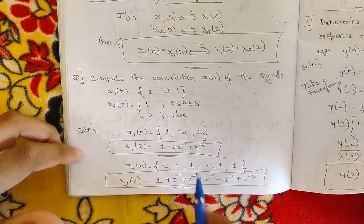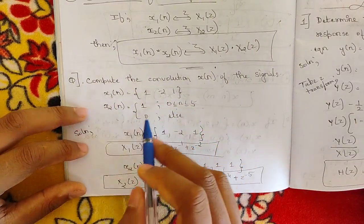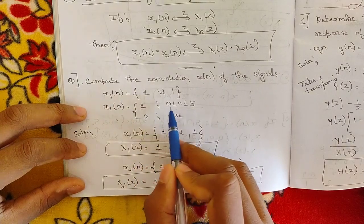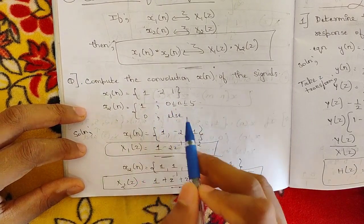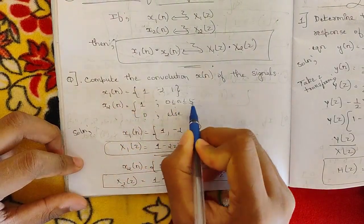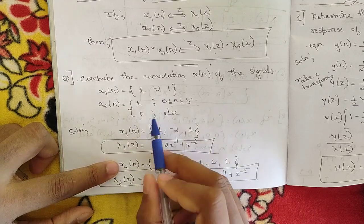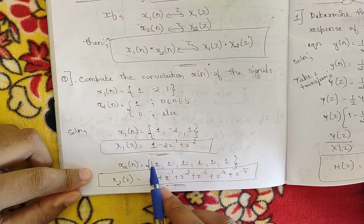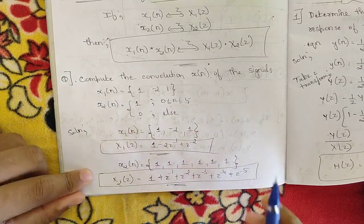Let's see this with an example: compute the convolution x[n] of signals x1[n] and x2[n], where x1[n] = {1, -2, 1} and x2[n] = 1 for n = 0 to 5, and 0 otherwise. So x2[n] has 6 points: x2[0] through x2[5] are all equal to 1, giving the sequence {1, 1, 1, 1, 1, 1}.